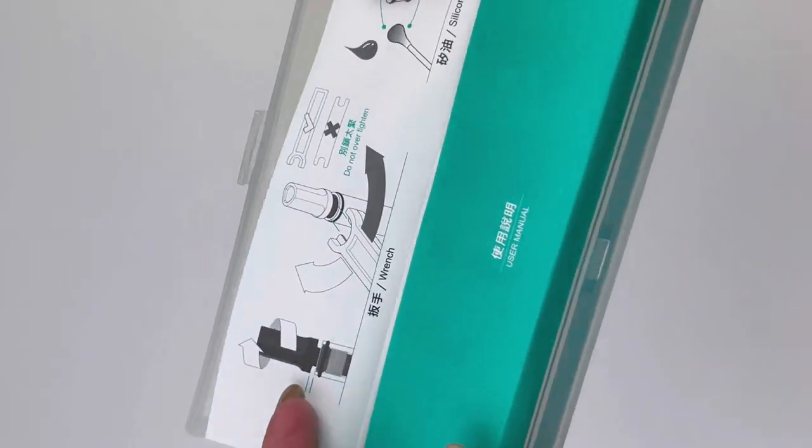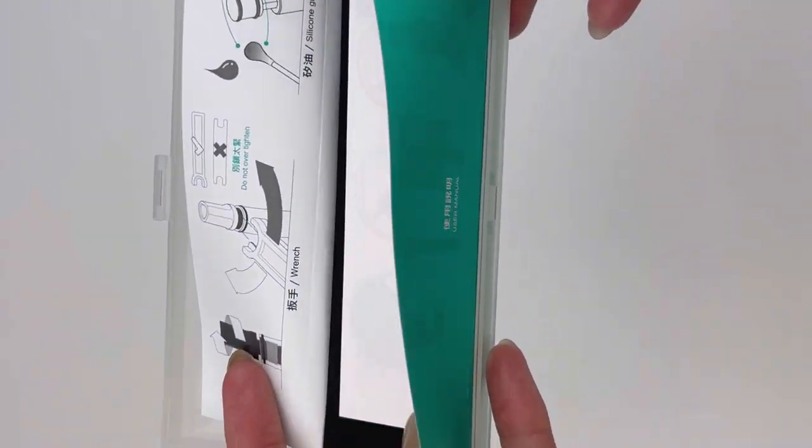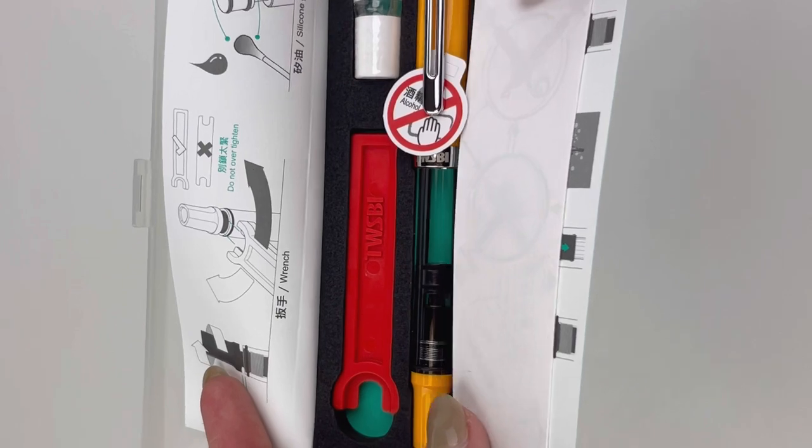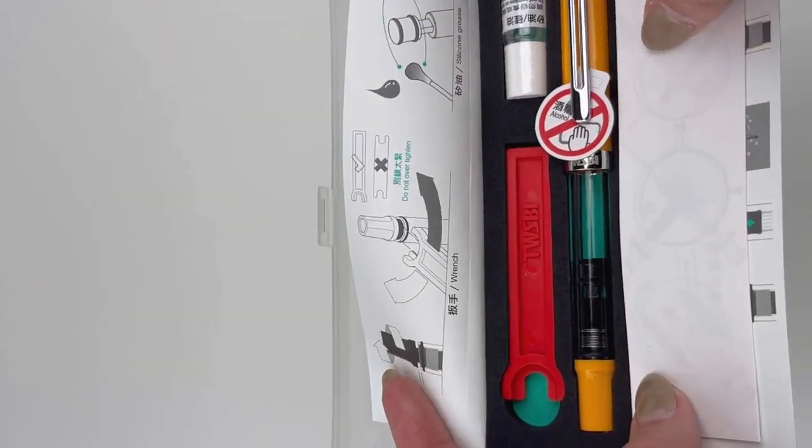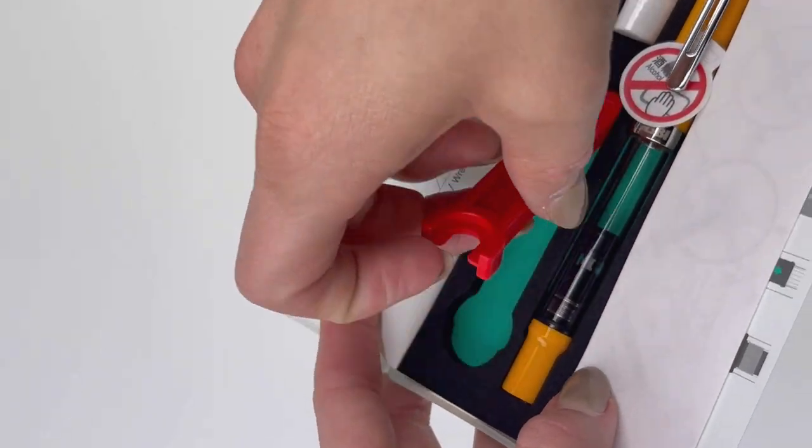This is the new TWSBI Eco-T Fountain Pen in Saffron. Let's get a good look at this. Great orangey yellow color. I guess I'd say yellowy orange.